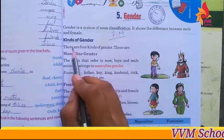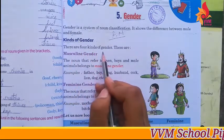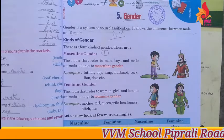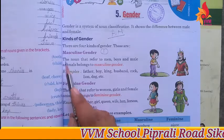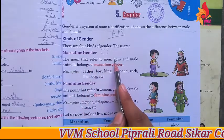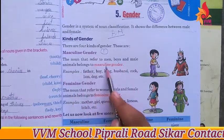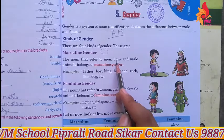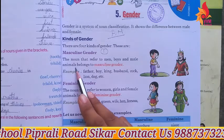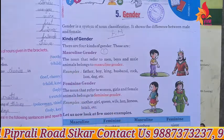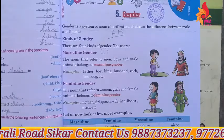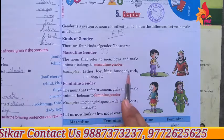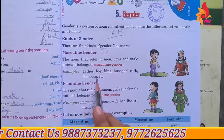So let's start — the kinds of gender. There are four kinds of gender. First: masculine gender. The nouns that refer to men, boys, and male animals belong to masculine gender. Examples: father, boy, king, cock, lion, dog — all of these are male.